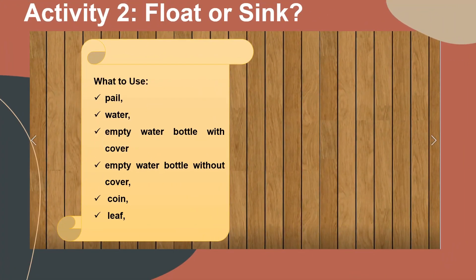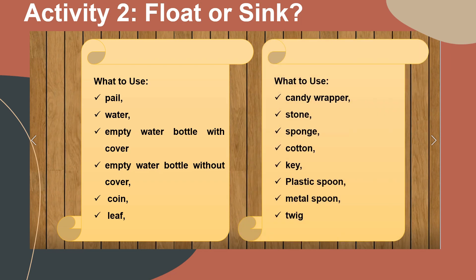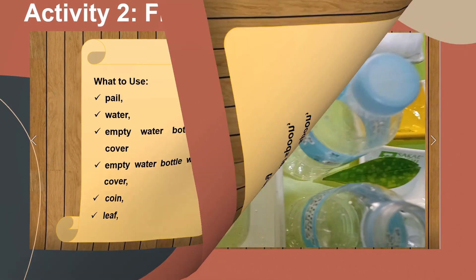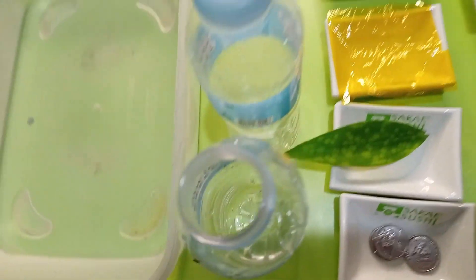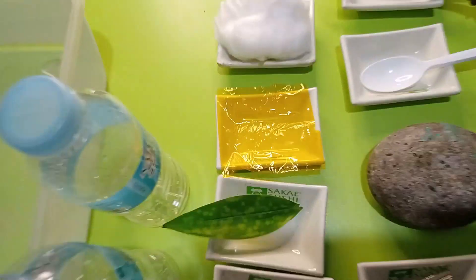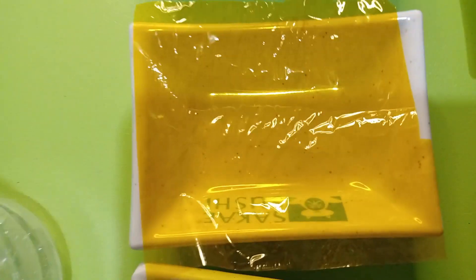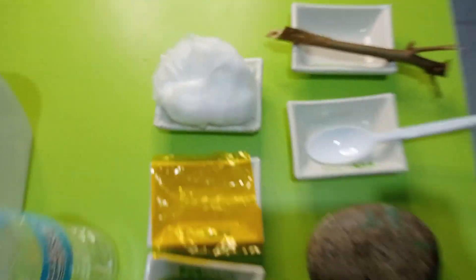For activity number 2, these are the materials needed: pail of water, empty water bottle with cover, empty water bottle without cover, coin, leaf, candy wrapper, stone, sponge, cotton, key, plastic spoon, metal spoon, and twig.